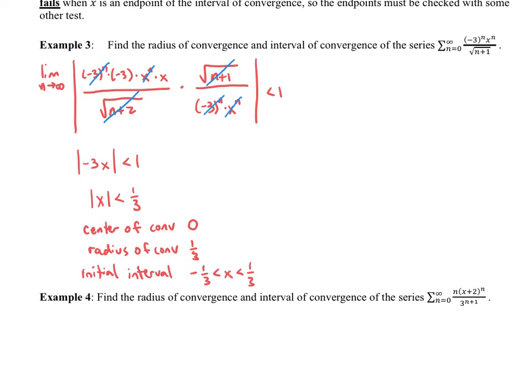We don't know what happens at the endpoints of the interval — that will be our next task. We are going to first start with testing x is equal to negative 1 third. If you were to have an FRQ question like this, as a standard FRQ out of 9 points, often the ratio test is in the ballpark of 4 points, and that includes the whole interval of convergence where you are testing the endpoints. Without showing the test of those endpoints, you are usually sacrificing probably 2 points out of the 4.